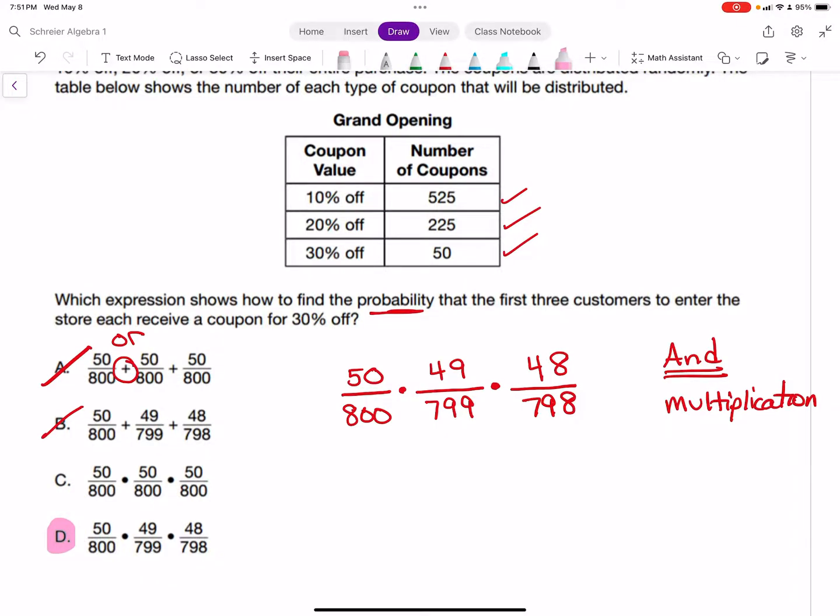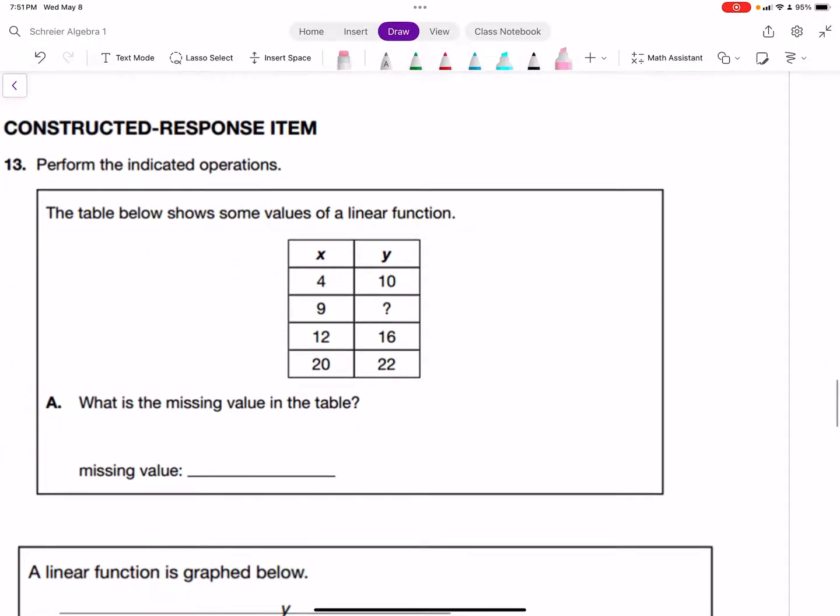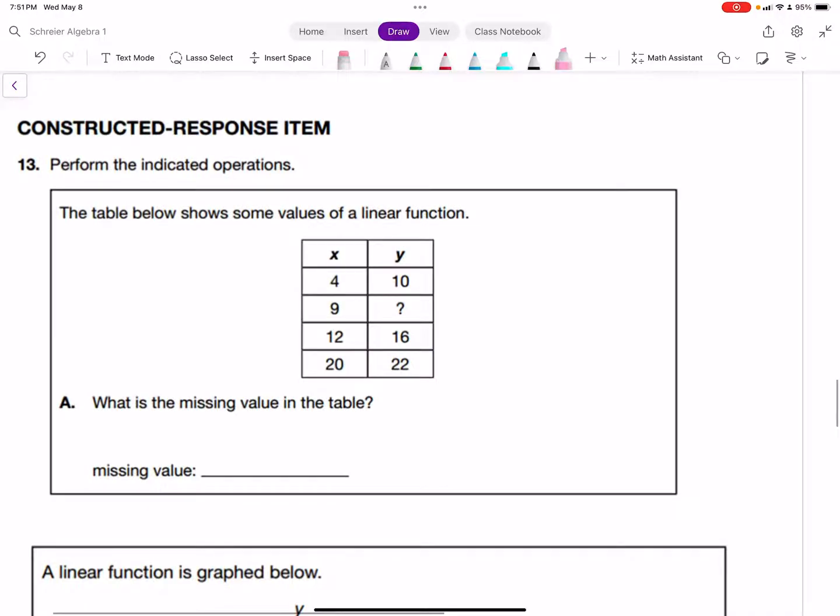Let's move to our final problem, a constructed response item. We have a table showing values of a linear function. A linear function is in the form y = mx + b. We know that we have a slope, and the slope can be found using two points.